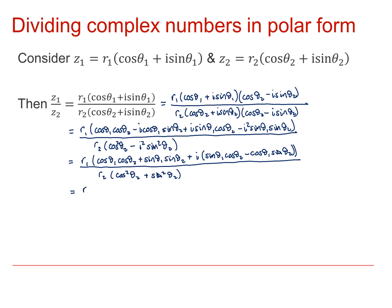OK, now comes the neat bit. This real term here, cos theta1 cos theta2 plus sin theta1 sin theta2, is just cos of theta1 minus theta2. And sin theta1 cos theta2 minus cos theta1 sin theta2 is sin of theta1 minus theta2, using the addition formulae.